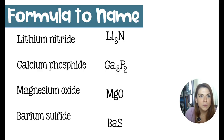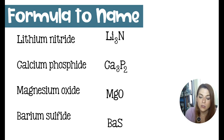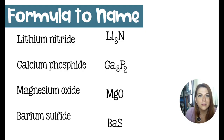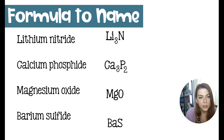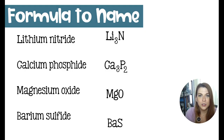Lithium nitride is Li3N. Lithium is in group 1, so its charge is +1. Nitrogen is in group 15 with five valence electrons — it needs three more, so it takes on a −3 charge. Crisscross those and you can't reduce, so you have Li3N. Magnesium oxide was reduced — magnesium is +2 and oxygen is −2, and those twos cancel when crisscrossed, giving MgO. Same with barium sulfide: barium is +2 and sulfur is −2.